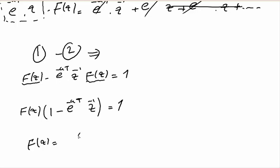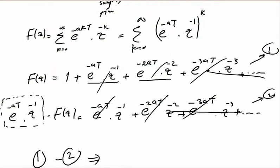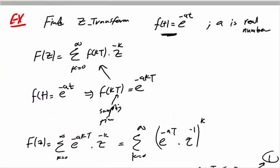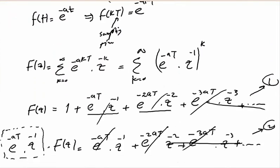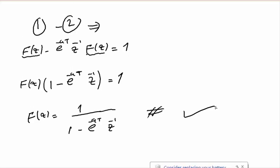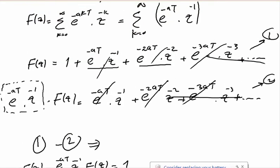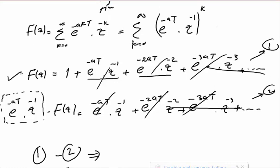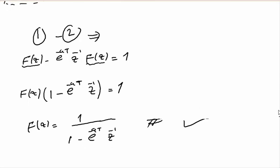Therefore, F(z) equals 1 over [1 minus e^(-aT)z^(-1)]. This is the closed-form solution — the Z-transform of the exponential function f(t) = e^(-at). You can also express it as an infinite series if needed. Thank you for watching. I hope this video is helpful. Please subscribe and leave any questions in the comments below.